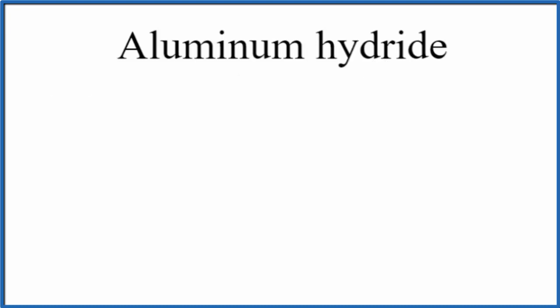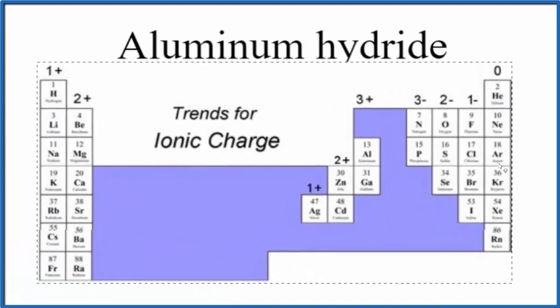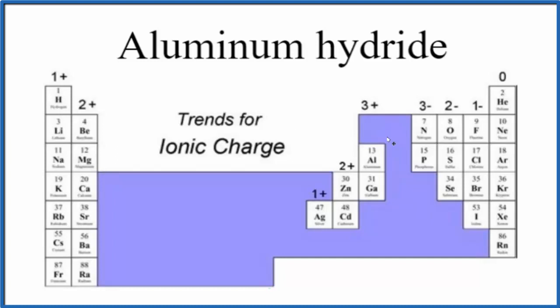So we're used to looking on the periodic table, finding the charges of these elements here, and we see that aluminum right here, here's our aluminum, that has 3+, it forms 3-plus ions.